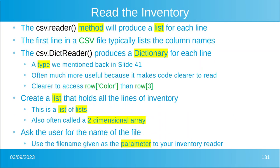Let's read the inventory. The CSV reader method will produce a list for each line. The first line in a CSV file typically has the column names. The CSV dictionary reader produces a dictionary for each line — a type we mentioned back in slide 41. It's often much more useful because it makes the code clearer to read, though it can sometimes be more difficult to write. It's clearer to access row['color'] than row[3], especially if there are 35 columns — it's hard to remember what row 31 is compared to row 32.